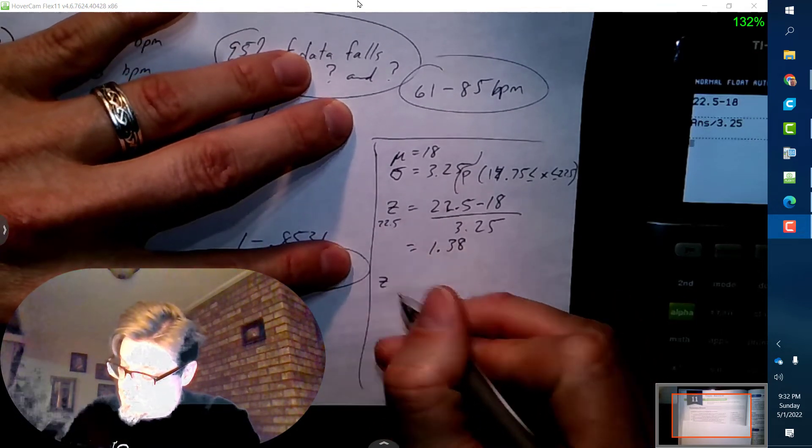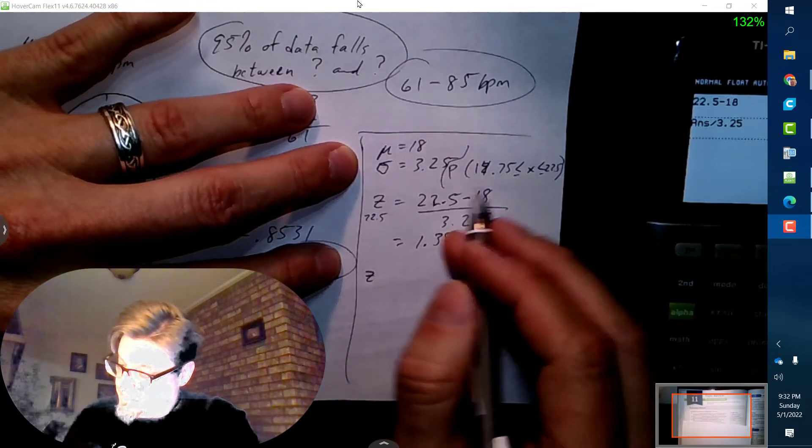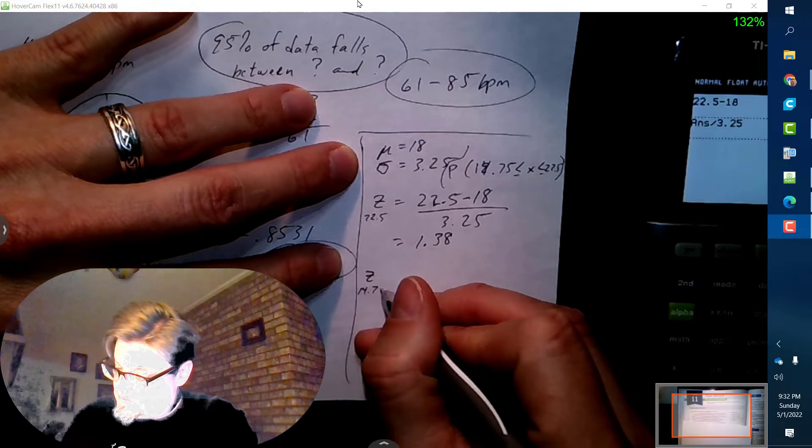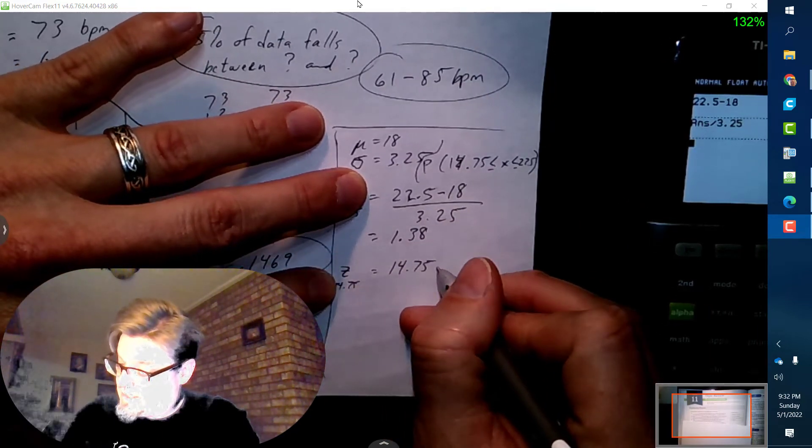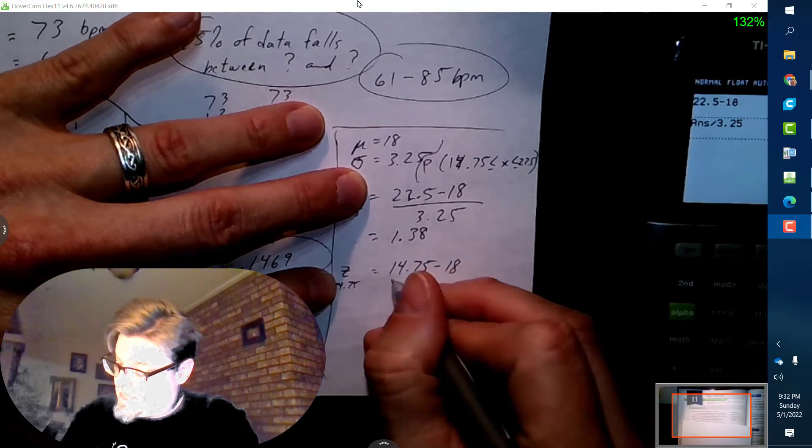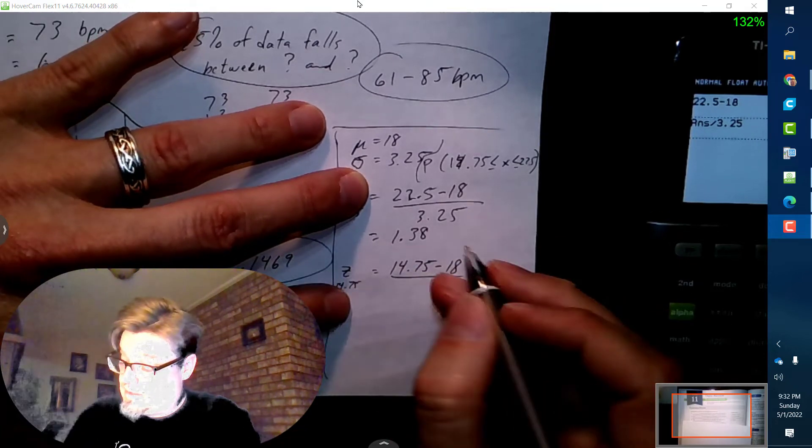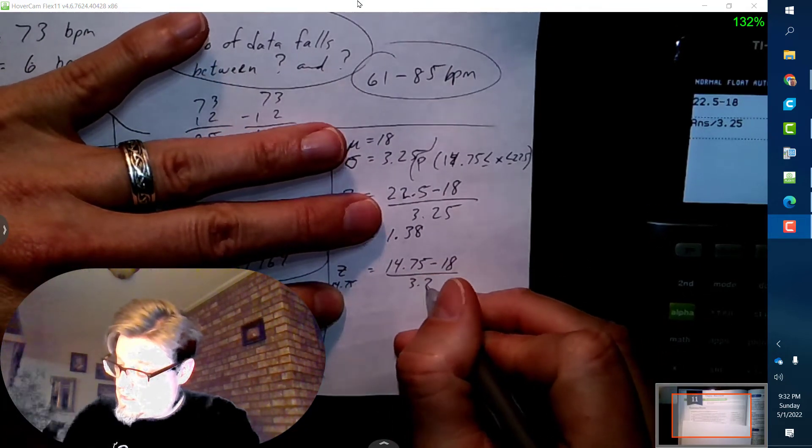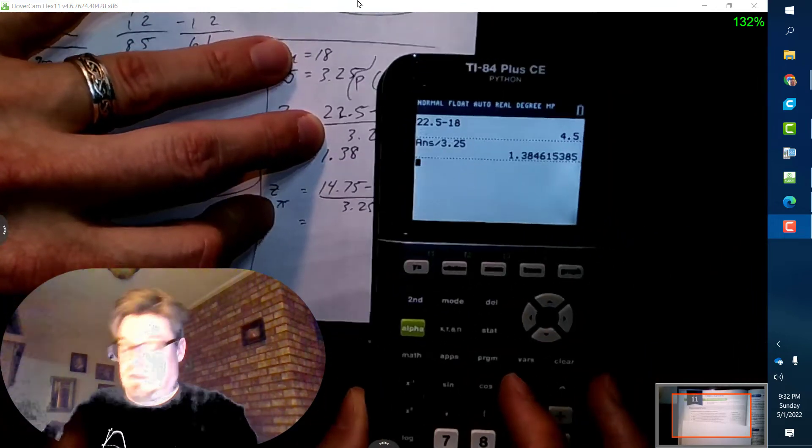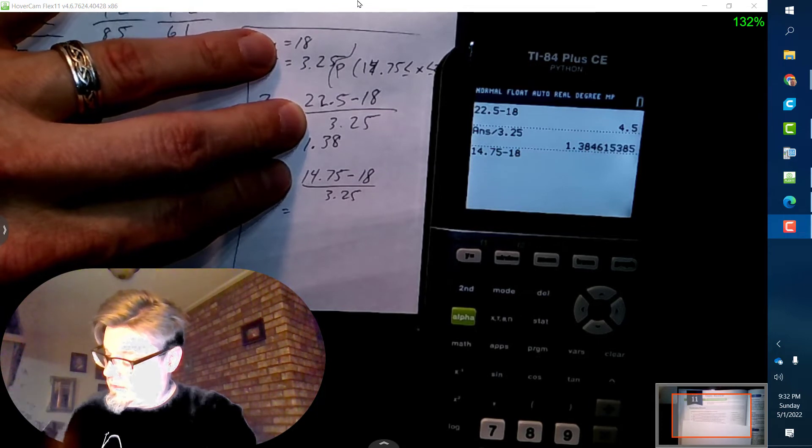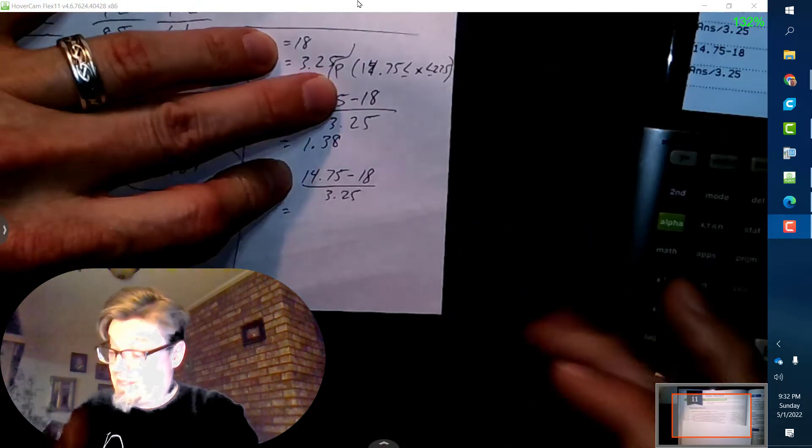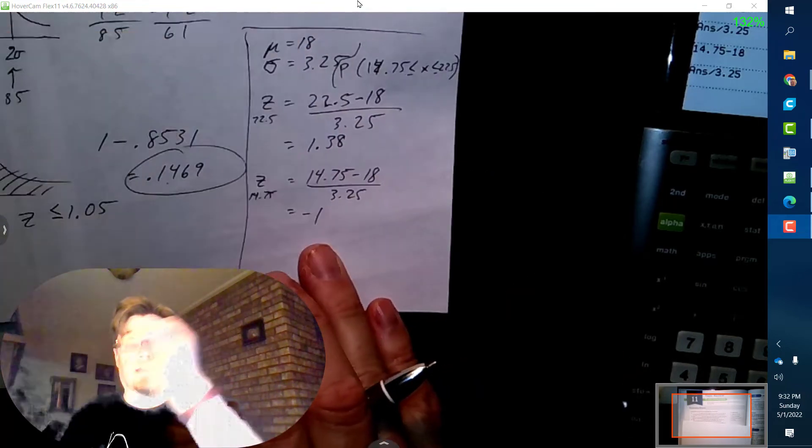Now here's the next z-score. The next z-score is for 14.75, so let's figure that out. 14.75 minus the mean, which should take us on the left hand side of it, so it better be negative. So 14.75 minus 18 divided by 3.25, I get negative 1 exactly. We are exactly negative one standard deviation on that side.